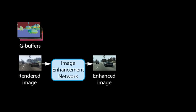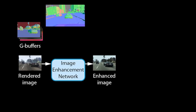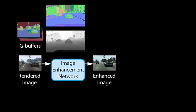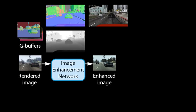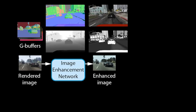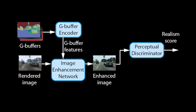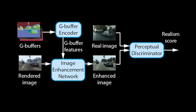The model uses something called G-buffers, which understand the temporal and geometric nuances in the image — the lighting, the glossiness, and the texture of each object within the frame. It compares that to a realistic image and produces a realism score using a perceptual discriminator. If the difference between the realism score of the real image and the enhanced image is minimized, the model can produce a fairly more realistic game in GTA.